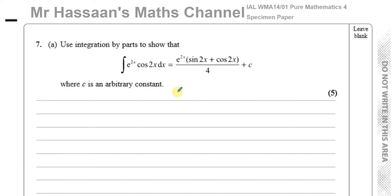Integration by parts — what we normally do is have a product of two unrelated functions; it's not a function within a function, you can't use the reverse chain rule, and it's difficult to use substitution. So we use integration by parts, and the formula is given in the formula book.